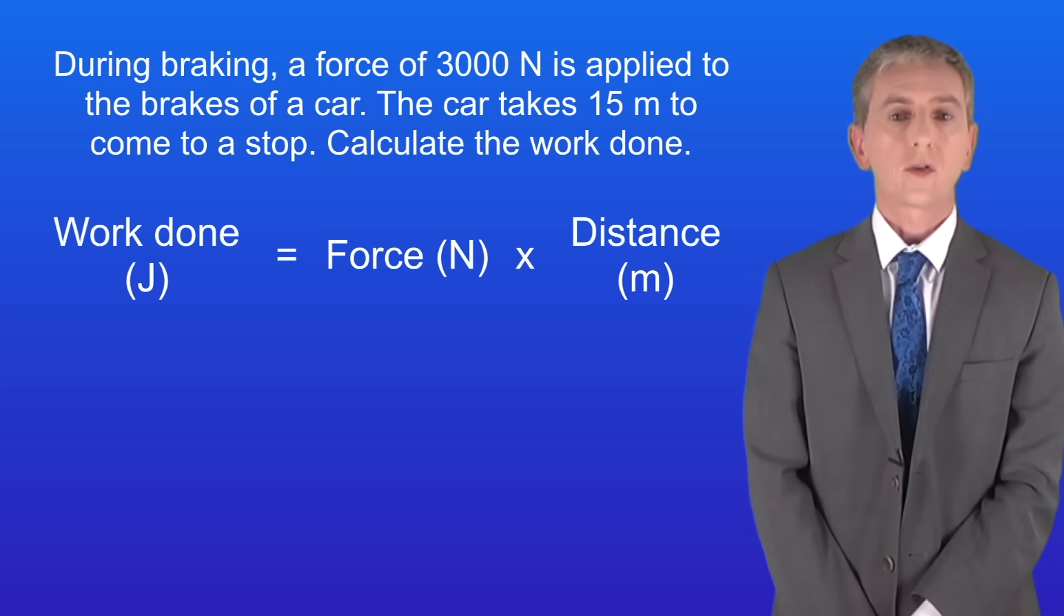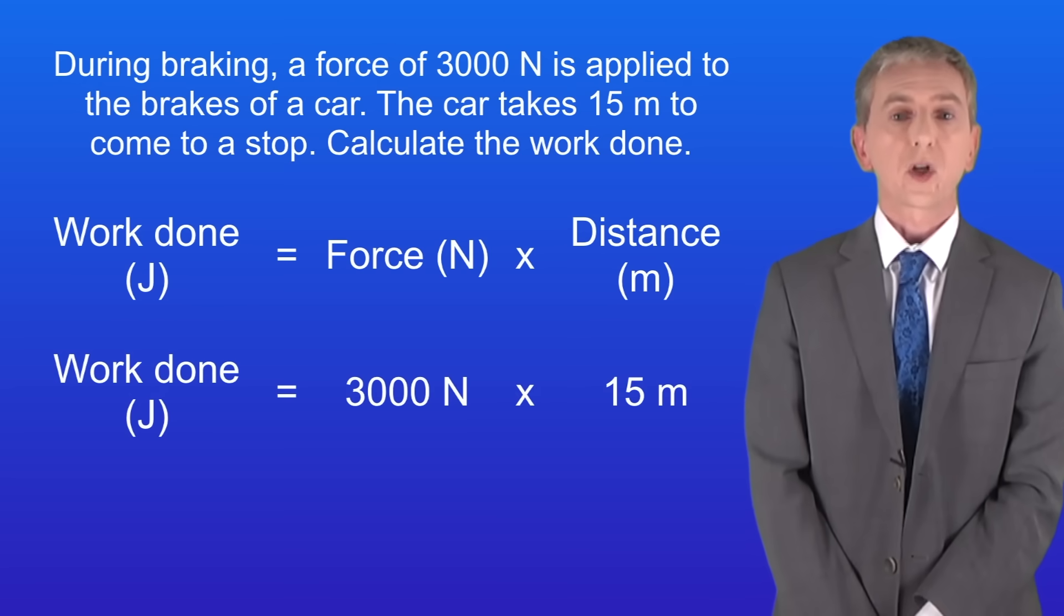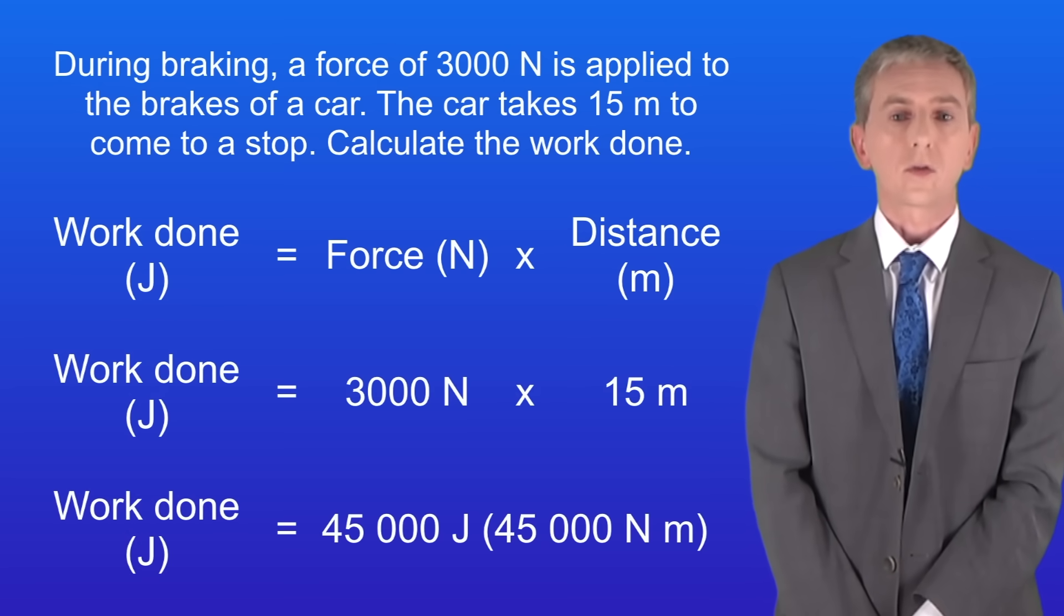Okay the work done equals the force multiplied by the distance. Multiplying 3000 newtons by 15 meters gives us a work done of 45,000 joules or 45,000 newton meters.